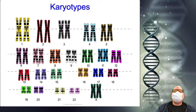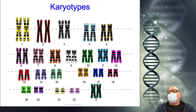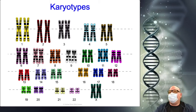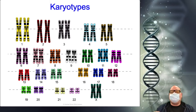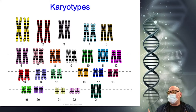That leads us to karyotypes. First of all, chromosomes are not this colorful in reality — this is artificially colored on the slide to make it visually easier. Chromosomes got their name because 'chromo' means color; when they were first discovered they were dyed with different stains, and scientists noted these colorful things.